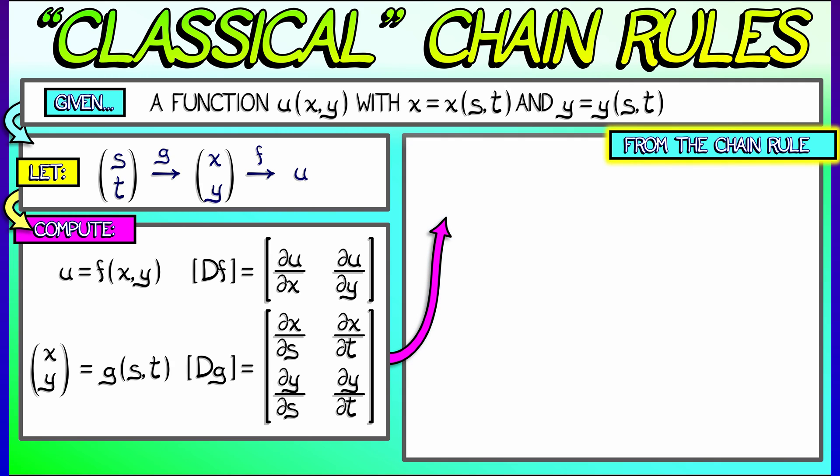Okay, now what does the chain rule say? The chain rule says that the derivative of the composition is the product of these two matrices in the proper order. So take the derivative of f, that row matrix, times the derivative of g, that 2 by 2 matrix.